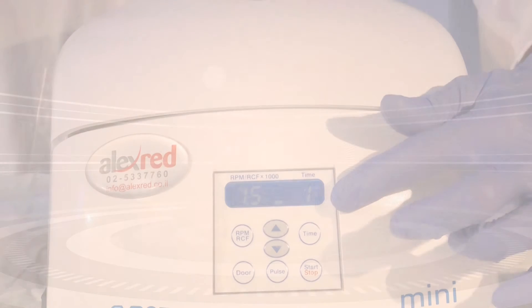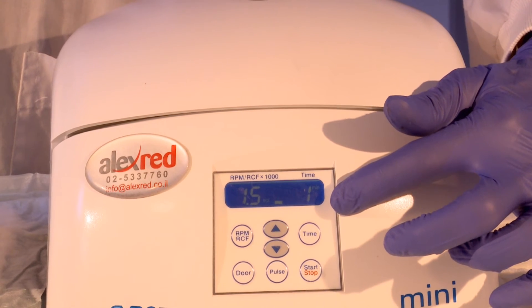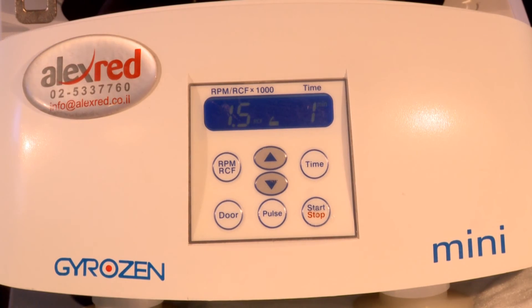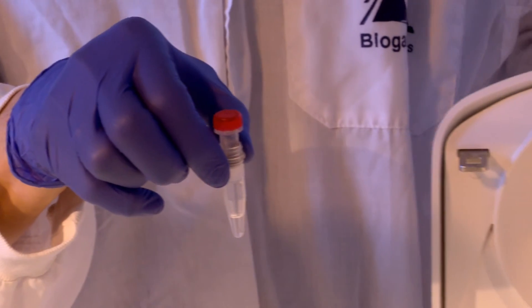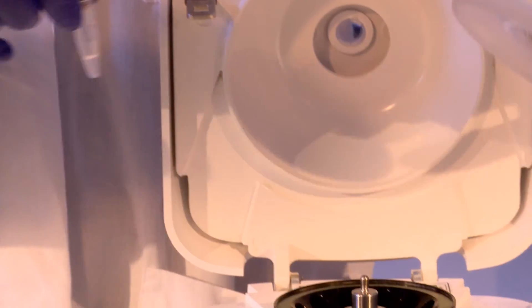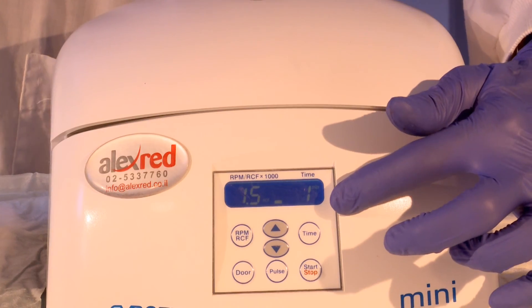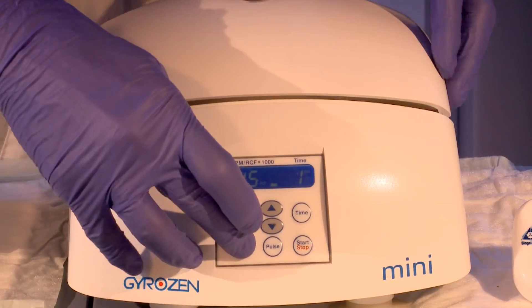Centrifuge method: This method requires a centrifuge which can contain the green-capped vials and maintain a speed of 1500g for one minute. Place both the column and the green-capped vial piggyback into the centrifuge. Activate the centrifuge for one minute at 1500g.